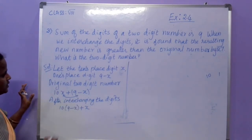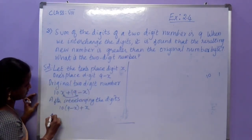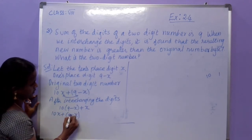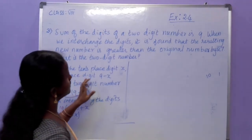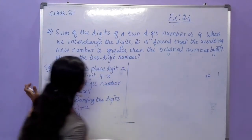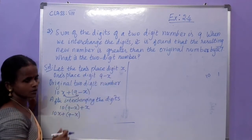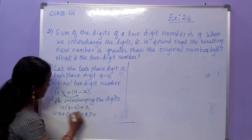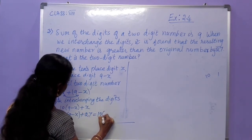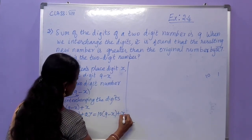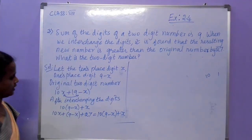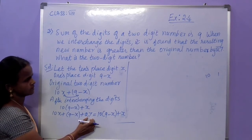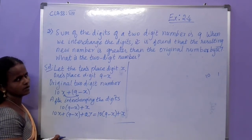Now, we write the original number plus 27 equals the interchanged number, because the new number is greater than the original number by 27. So: 10x + (9 minus x) + 27 = 10(9 minus x) + x.